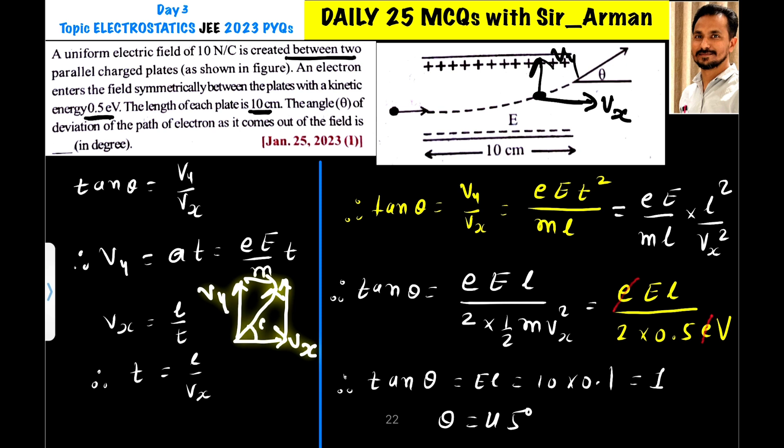And if this is the angle theta with the horizontal then we can write tan theta equals opposite, so your opposite is vy and horizontal is vx. So tan theta equals vy by vx.